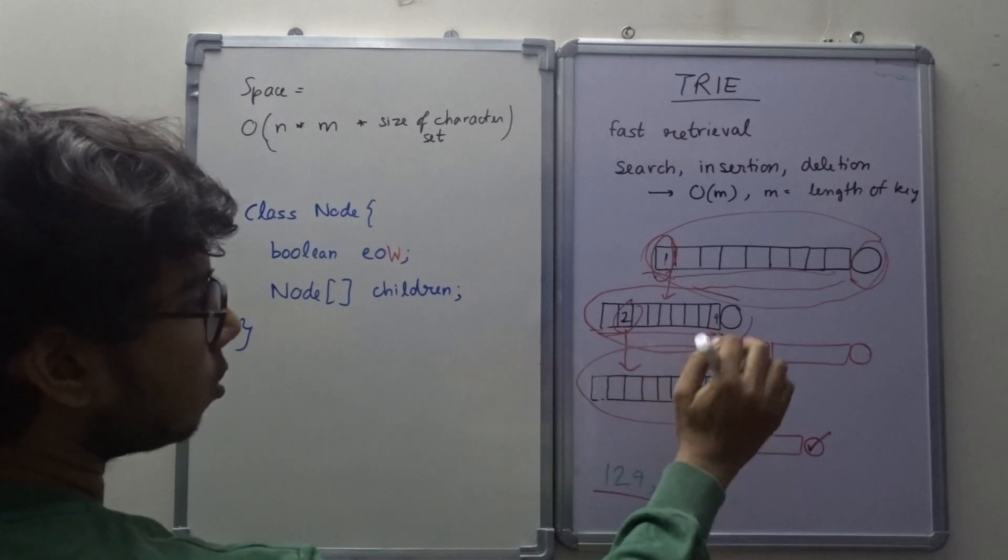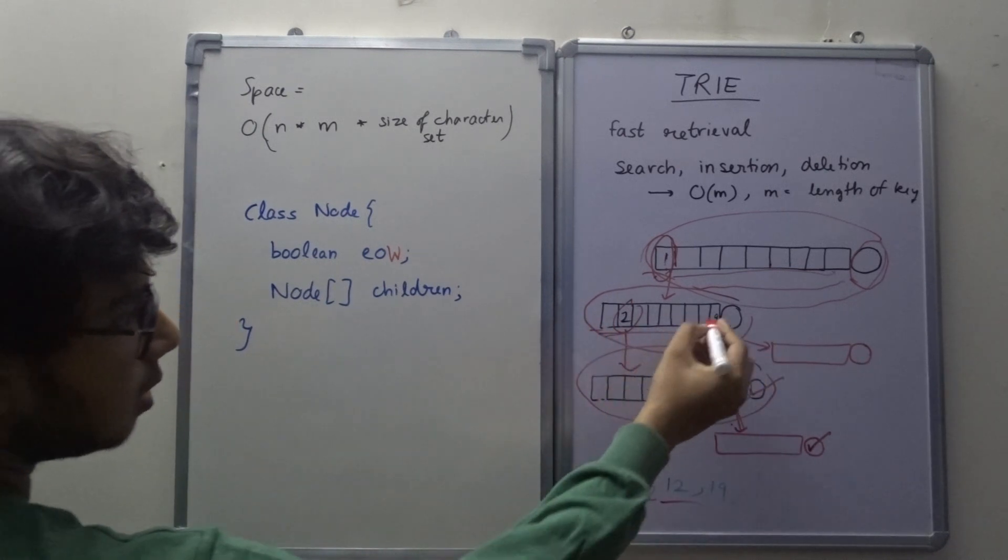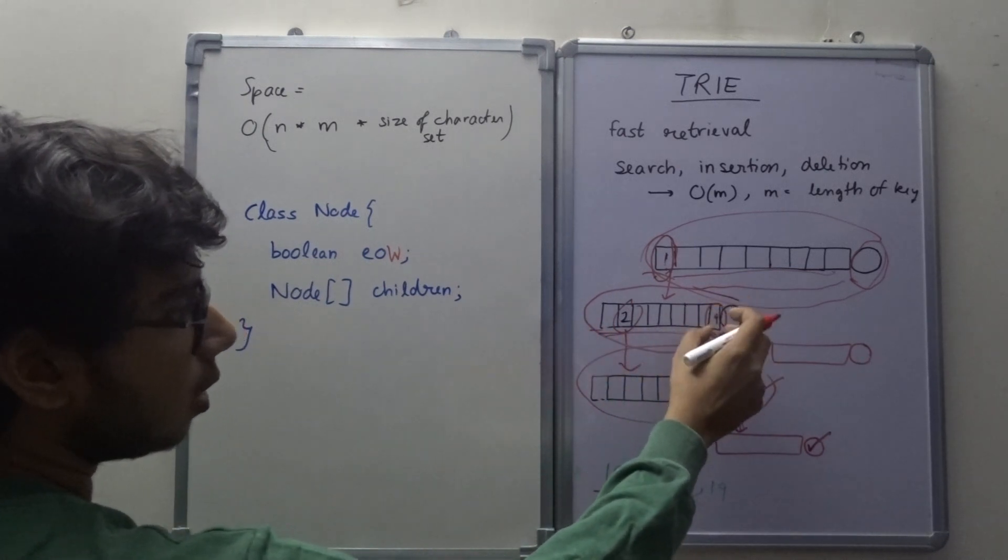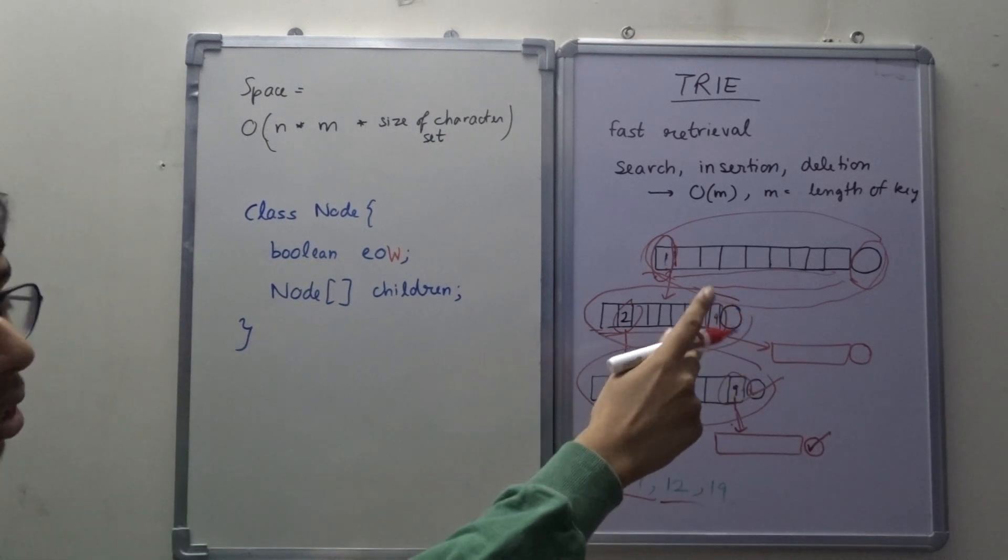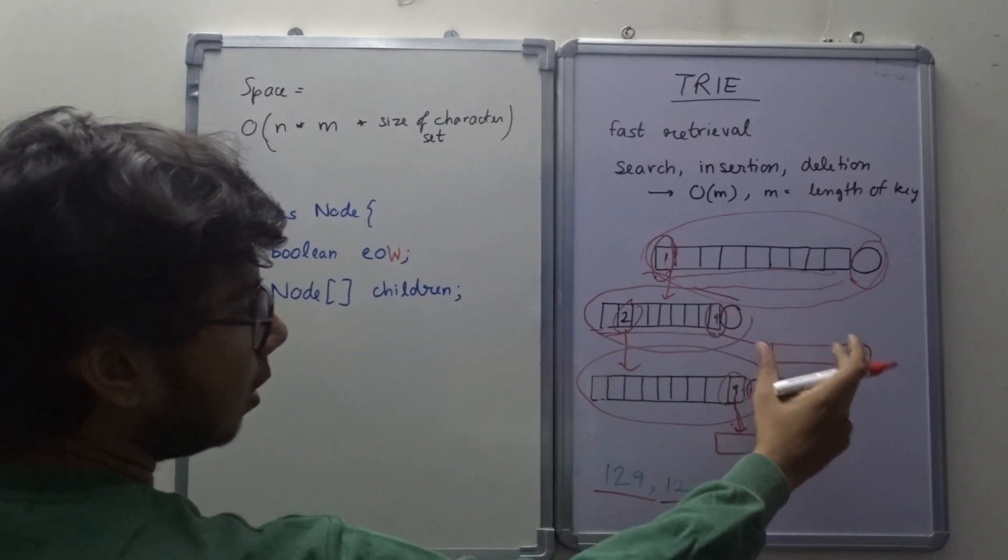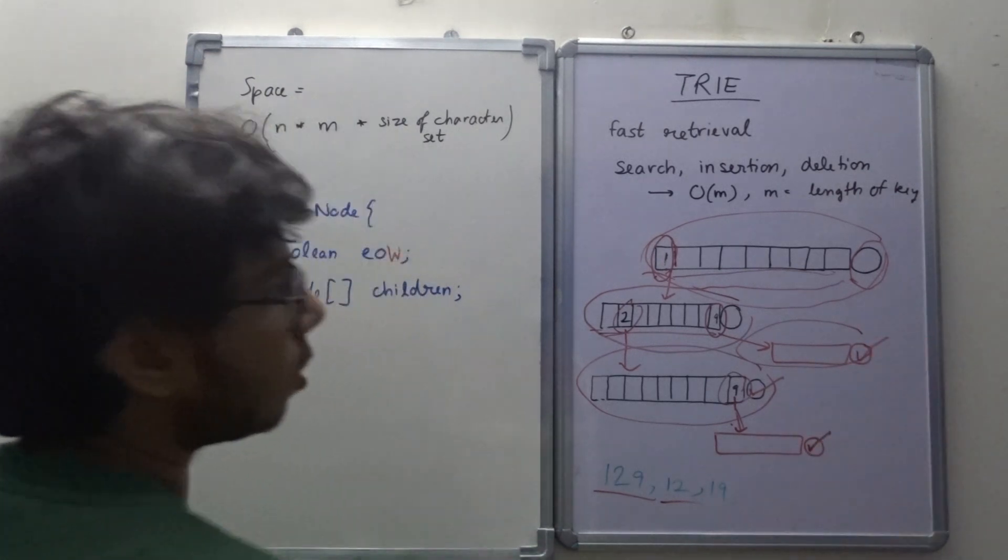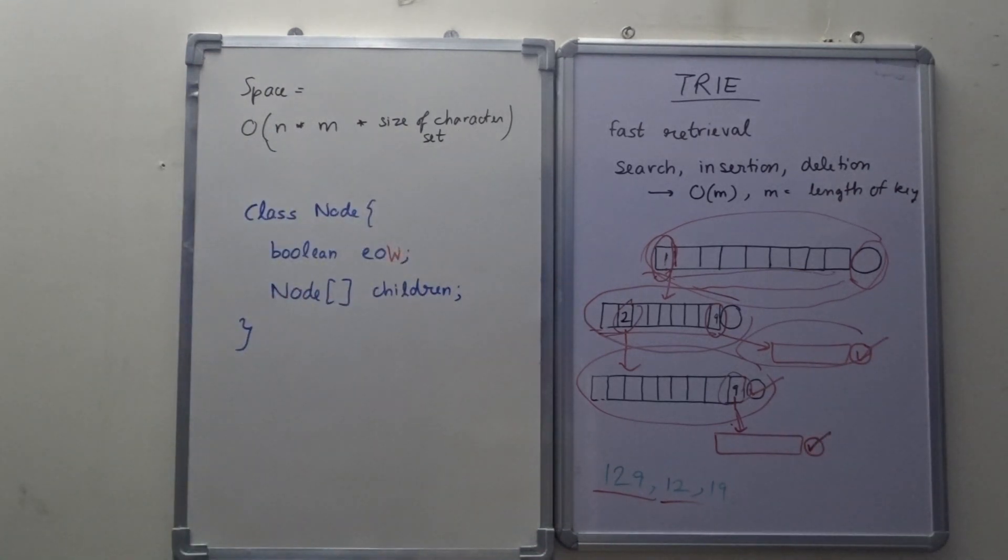So here I can see, all of these keys have been inserted in the Trie. So the Trie brings down the order of insertion as big O(m).